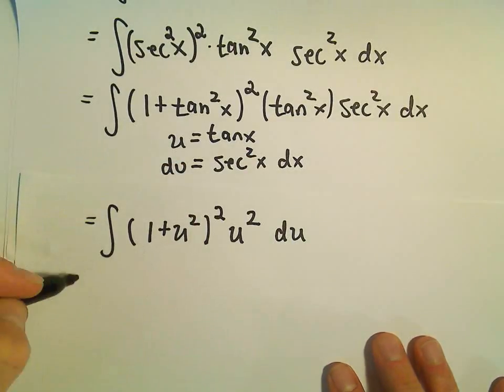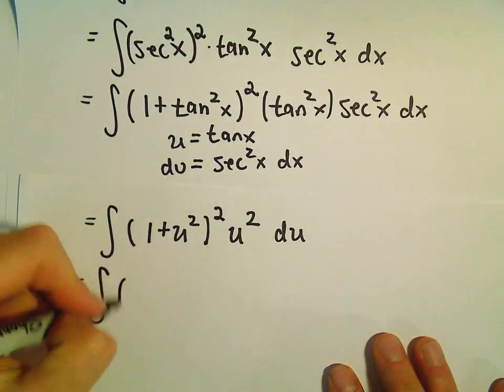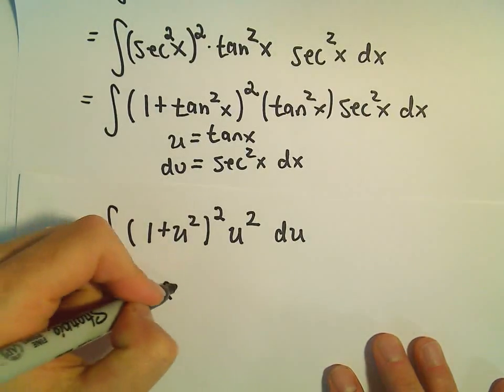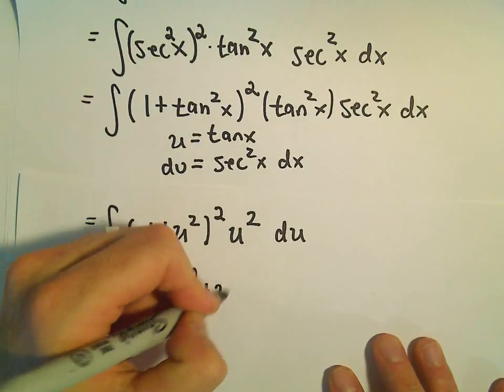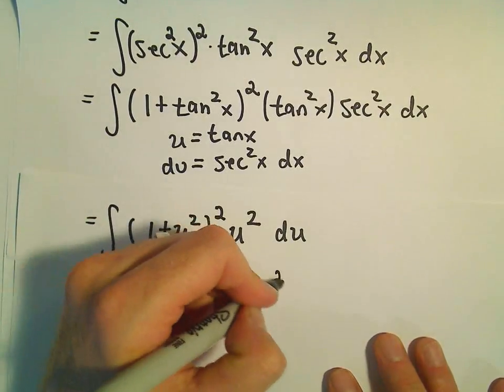So 1 plus u squared, we have to distribute that out. 1 plus u squared times 1 plus u squared gives us 1 plus 2u squared plus u to the fourth, times u squared du.